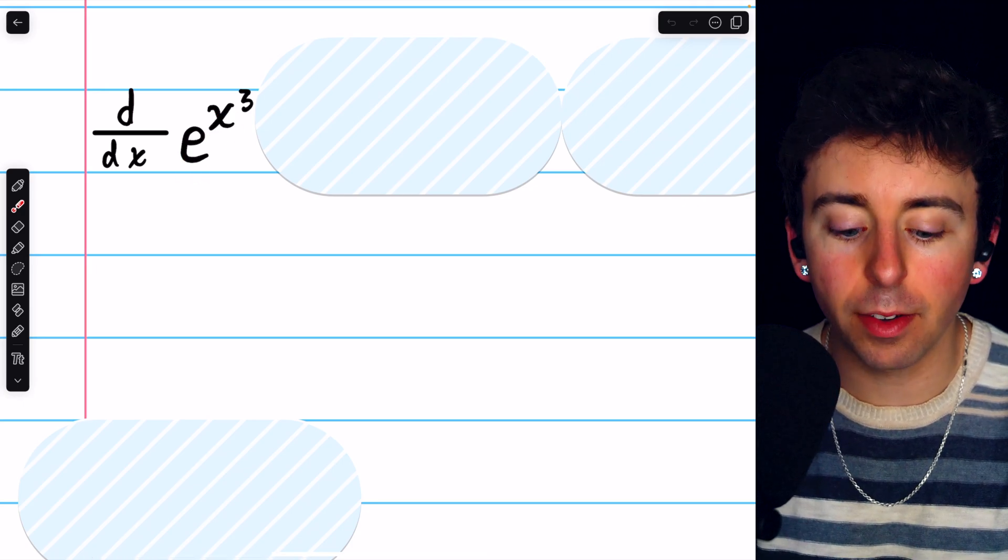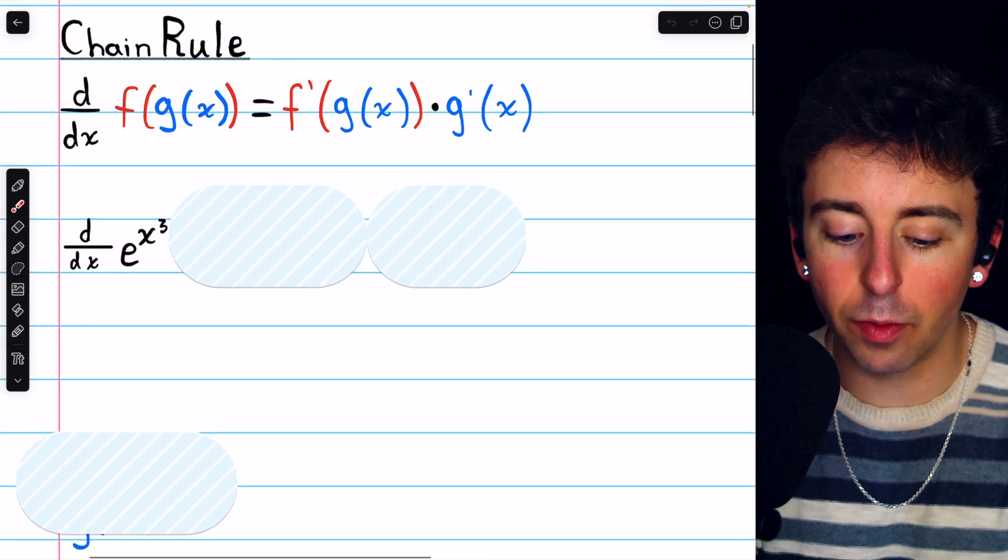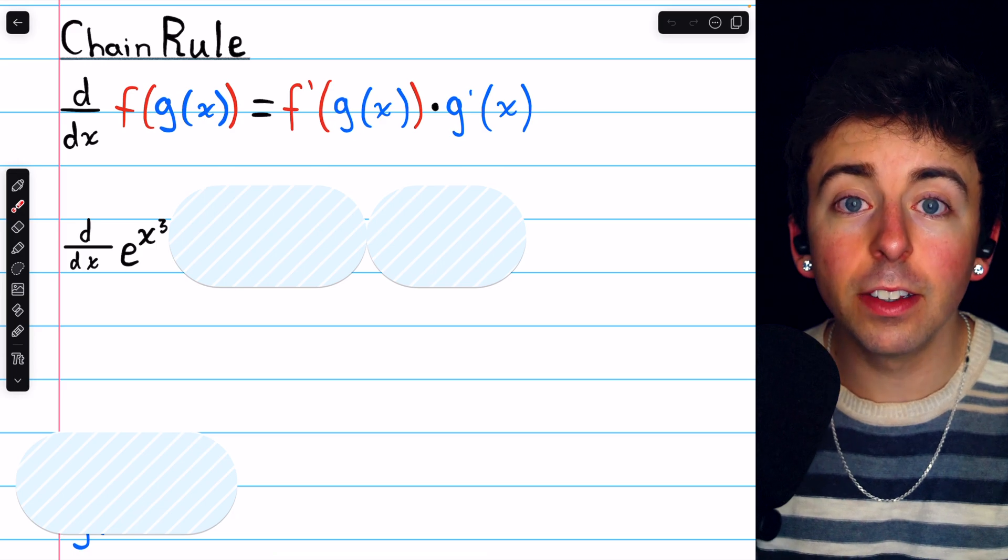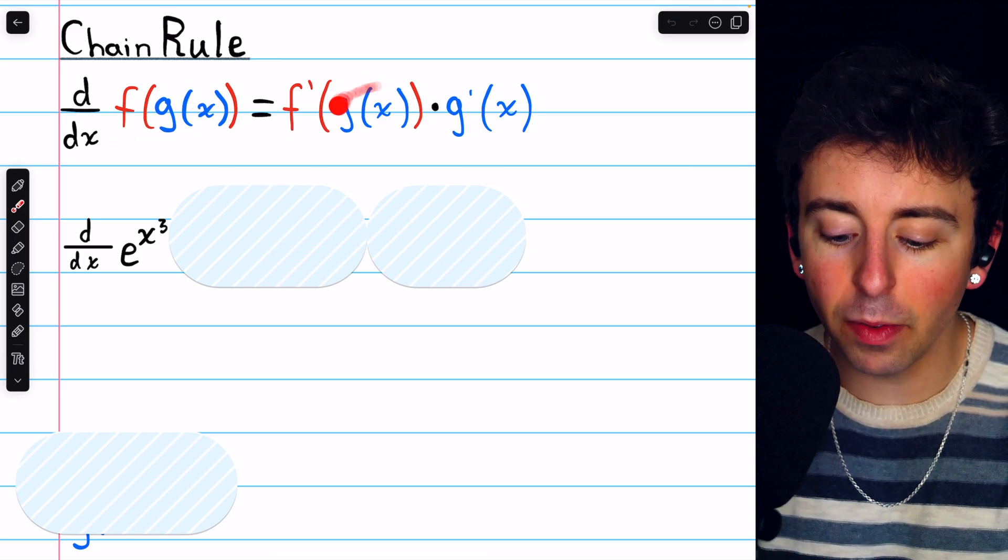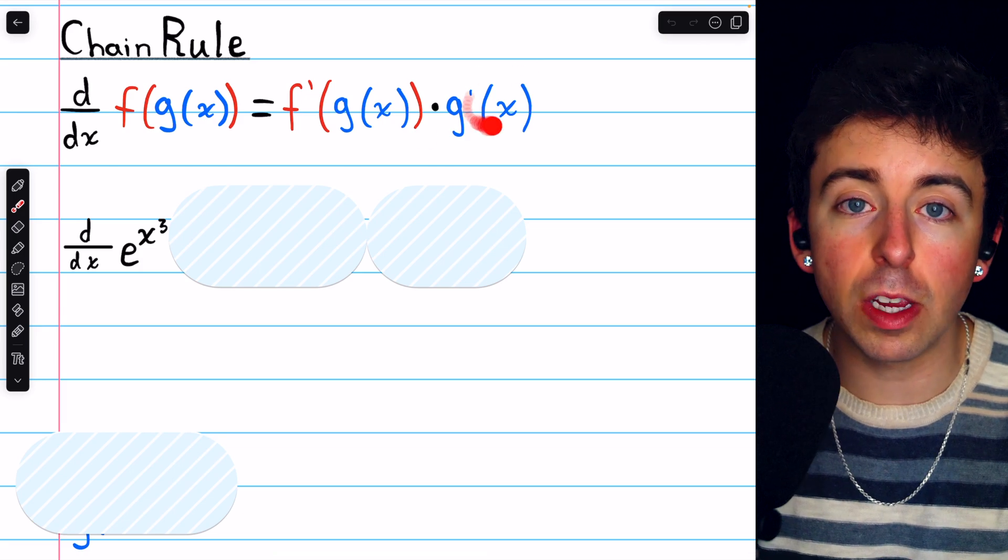e to the x cubed is a composite function, so to take its derivative we need the chain rule. The derivative of f of g of x is f prime of g of x times g prime of x.